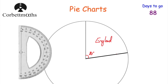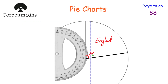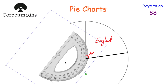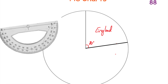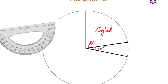Next is France, which is 20 degrees. We rotate the protractor so the center is still on the center of the pie chart and the zero is on the new line we've just drawn. Every time you draw a new line, you put the zero on that new line. We measure 20 degrees — 10, 20 — mark it, remove the protractor, draw the line, and label that sector France.